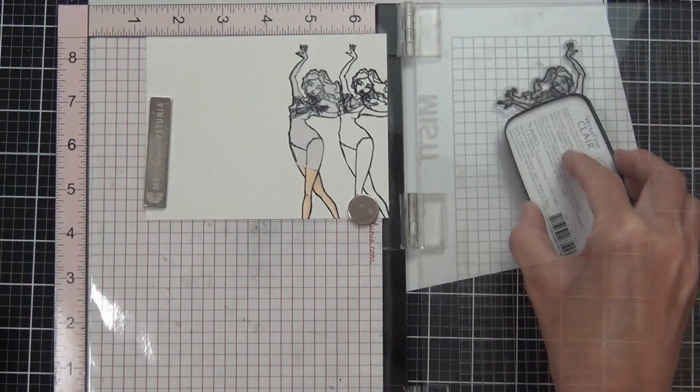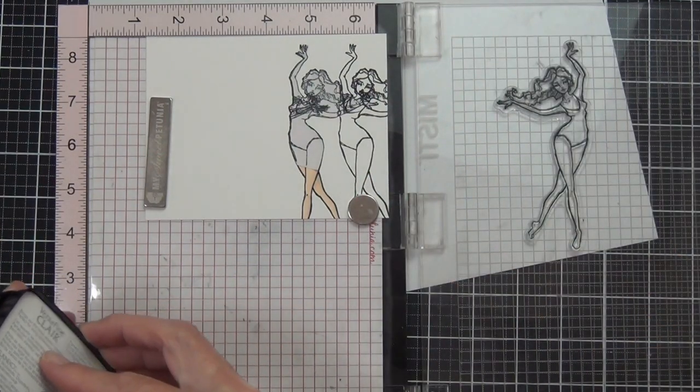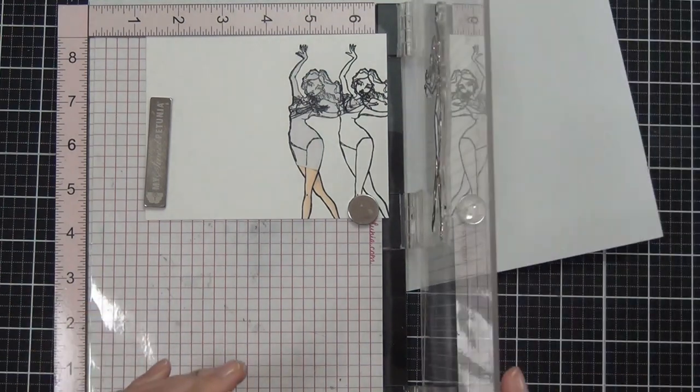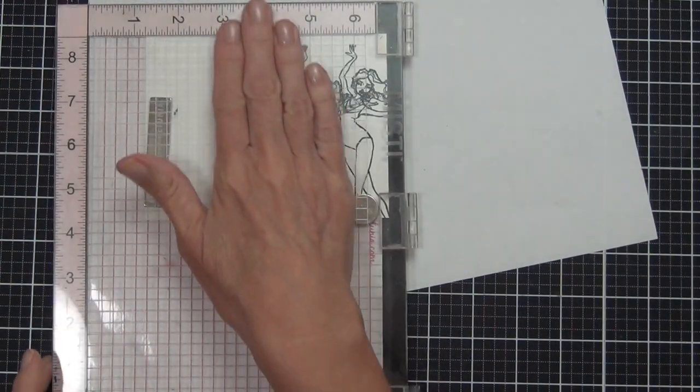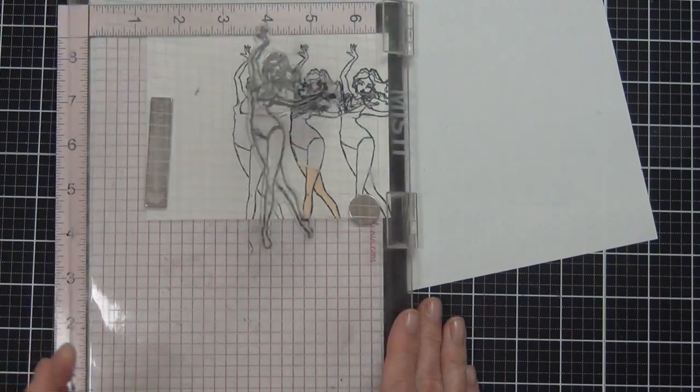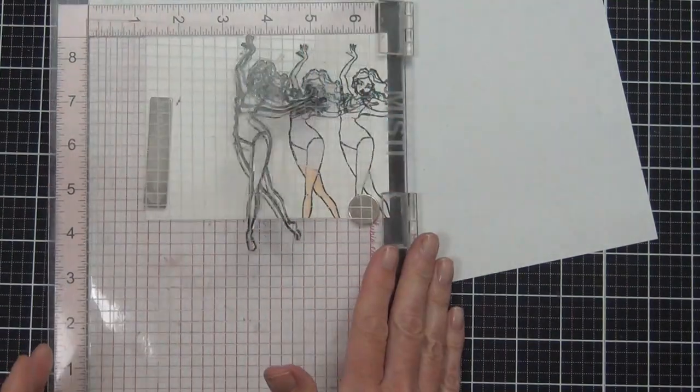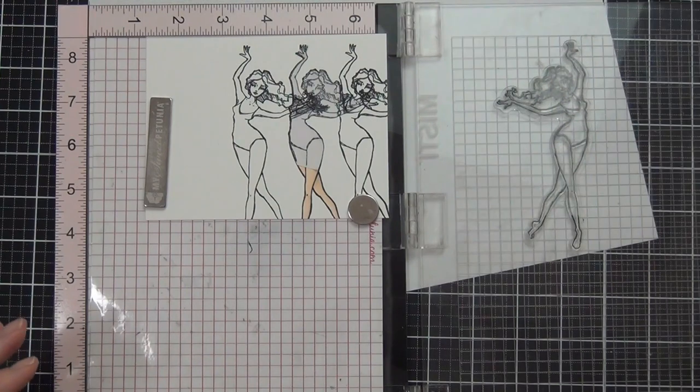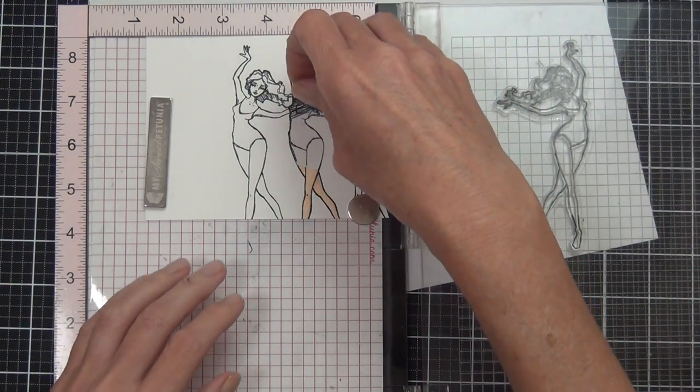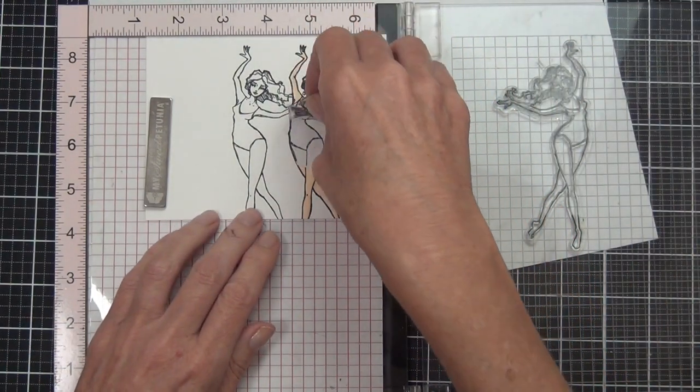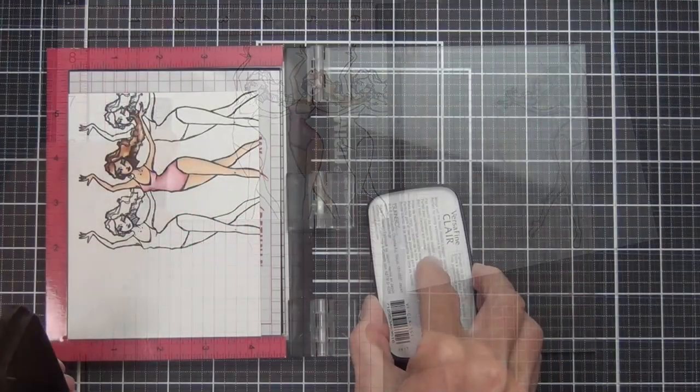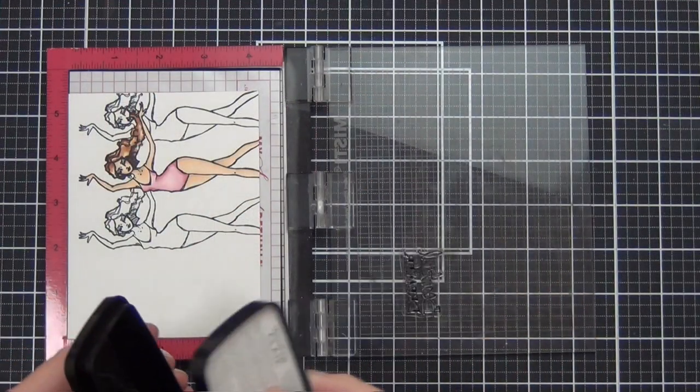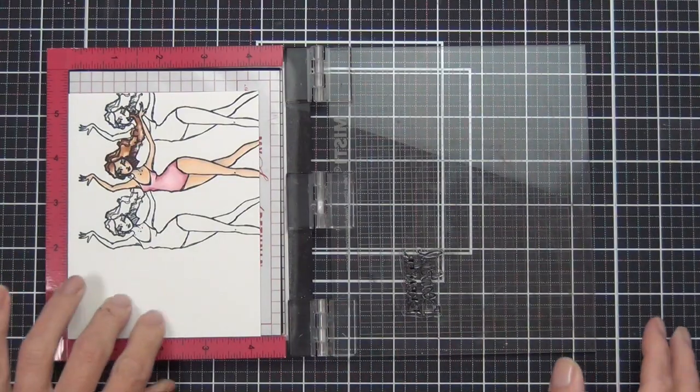This is where the Misti comes into its own to do the repeated stamping. All I need to do is shift my cardstock along. I don't need to worry about the height of the girl because I wanted it to look like it was the same height along, so by just shifting it along the top of the card I could easily stamp her twice more.